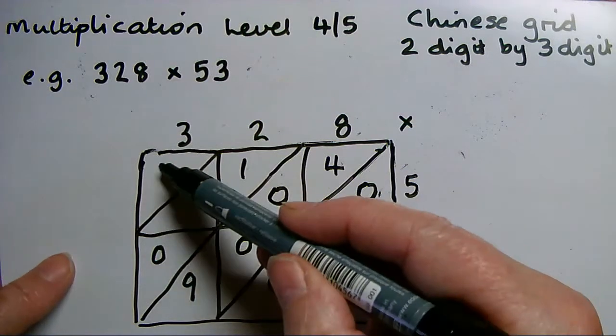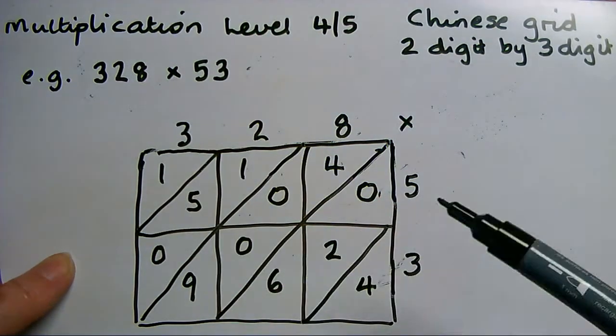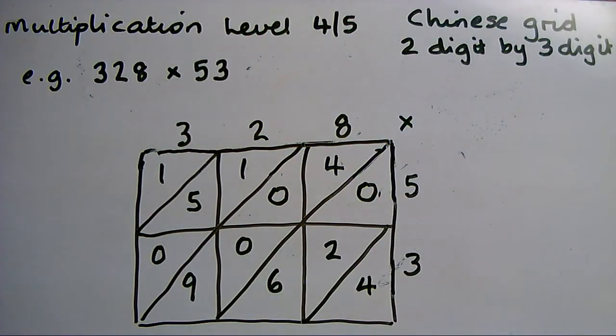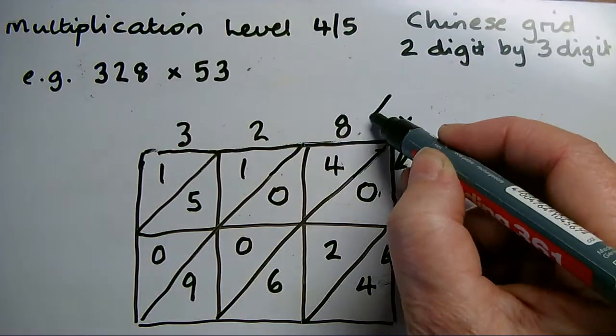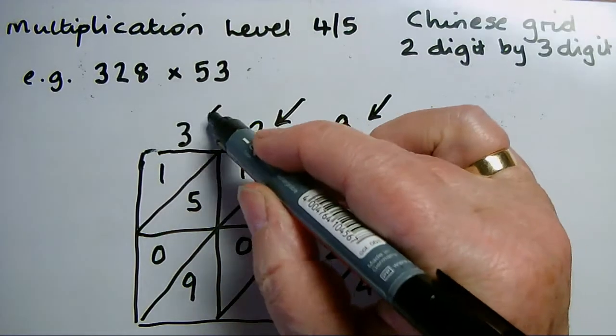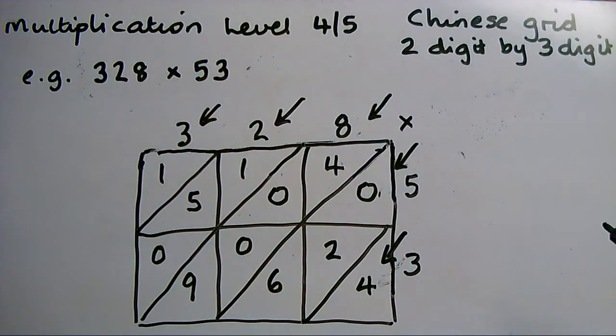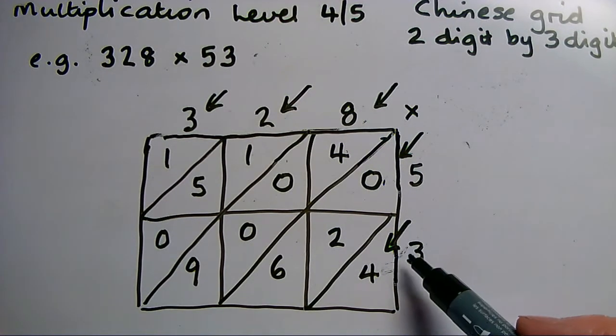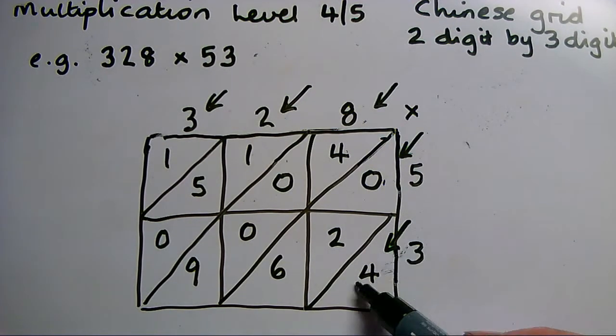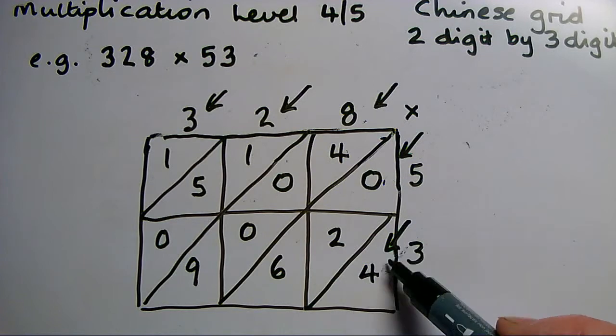Now this is where the adding up part at the end is different. Instead of just writing all that lot down and adding it together, I add down the diagonals. So wherever I can see a diagonal between the columns I'm going to add there, and I'm going to write the answers at the bottom.